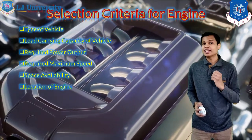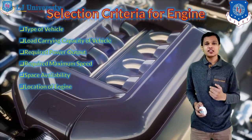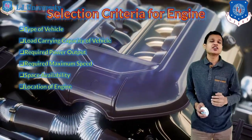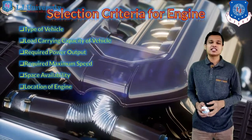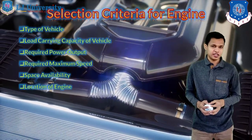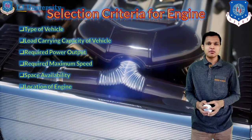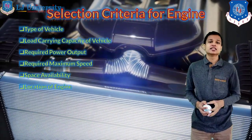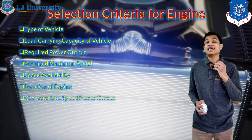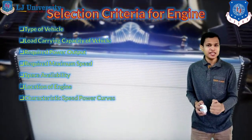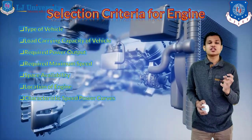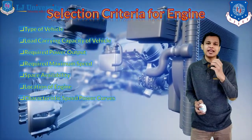The next thing is the location of the engine. In the case of auto rickshaws, the engine was located below the driver's seat earlier. Now in the case of CNG auto rickshaws, the engine is located at the rear side of the vehicle. So the location is important when selecting the engine used in two and three wheelers.